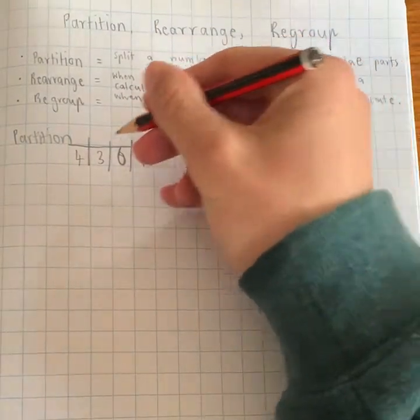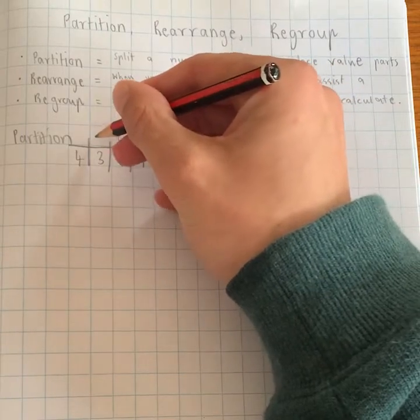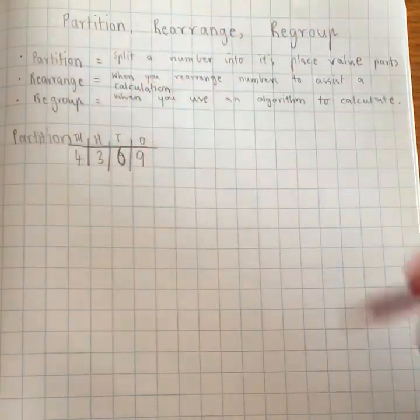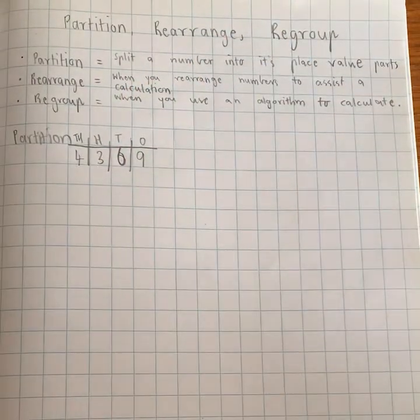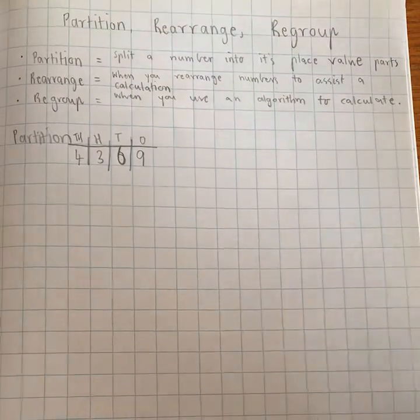So this is the ones, O for one, tens, T for tens, the hundreds, H for hundreds, and TH for the thousands. So when we partition a number, what we're thinking about is breaking it into its place value parts.